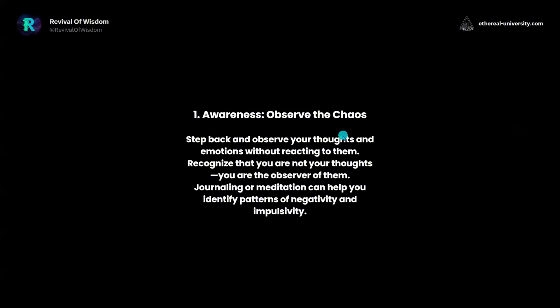In order for this to benefit our lives, we must first have awareness and observe the chaos. Step back and observe your thoughts and emotions without reacting to them. Recognize that you are not your thoughts — you are the observer of them. You are the soul, the midpoint between left and right, zero and one. Journaling or meditation can help you identify patterns of negativity and impulsivity, so we can recognize the chaos within us and transmute it.